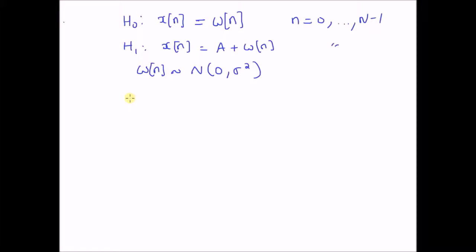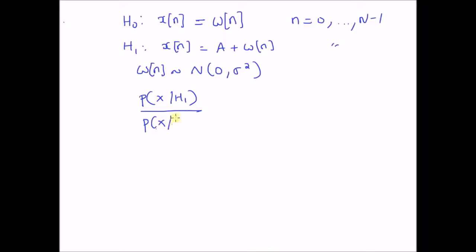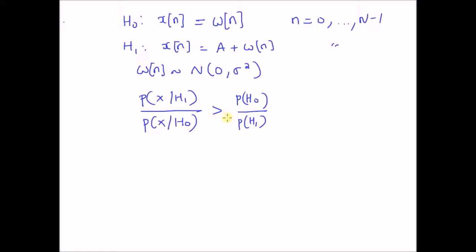From a previous video, we know that the test corresponding to minimum probability of error is given by the likelihood ratio: probability of x under H1 over probability of x under H0, which should be greater than the ratio of the prior probabilities P(H0) over P(H1). This is the test corresponding to minimum probability of error.